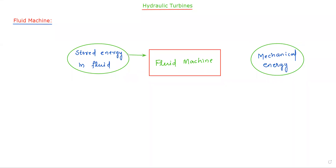The fluid machine converts stored energy in fluid into mechanical energy, and also converts mechanical energy into stored energy. This mechanical energy is very important — currently and in the future, we are mostly using mechanical energy especially for generating electricity, and partially for some different applications.